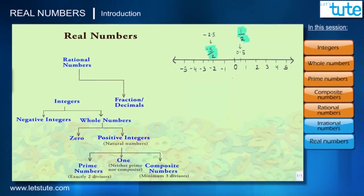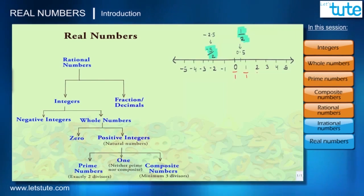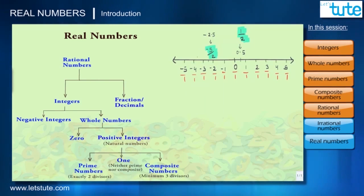Note that every integer is also a rational number, as we can write the integer 0 as 0/1, 1 as 1/1, 2 as 2/1, and so on. We also know that rational numbers can be written in decimal form.